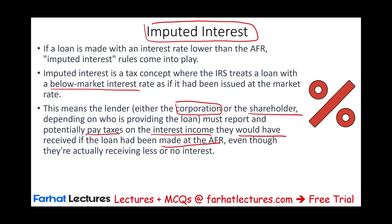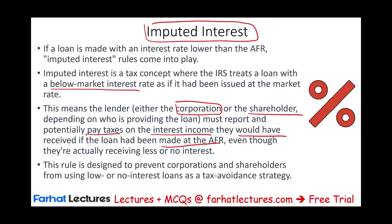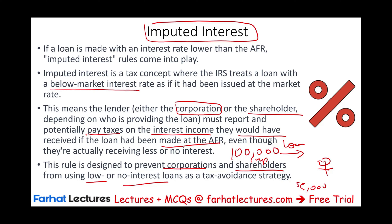This rule is designed to prevent the corporation and shareholders from using low or no-interest loans as a tax avoidance strategy. For example, if a shareholder borrows $100,000 from the corporation with no interest, but borrowing from a bank would cost 5% — or $5,000 per year — the government says you are trying to take out a dividend indirectly. That's a tax avoidance strategy, and that's where imputed interest comes into play.